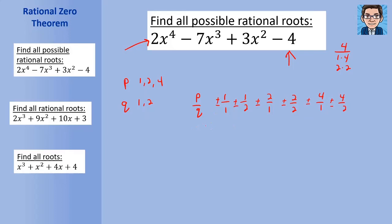Now let's simplify. 1 over 1 is plus or minus 1. 1 over 2 is plus or minus one half. 2 divided by 1 is plus or minus 2. 2 divided by 2 is the same as 1, so we don't repeat it. 4 over 1 is plus or minus 4. And 4 over 2 repeats 2, so we don't repeat that either. So we've got eight different possible roots: plus or minus 1, plus or minus one half, plus or minus 2, and plus or minus 4.